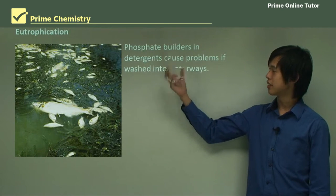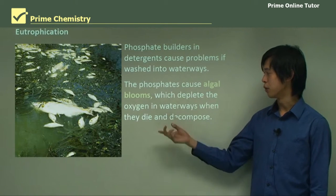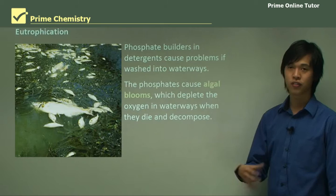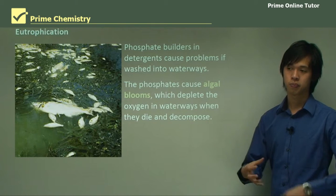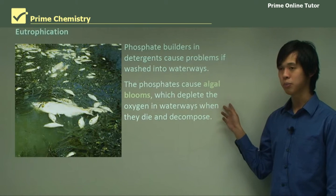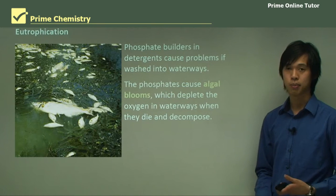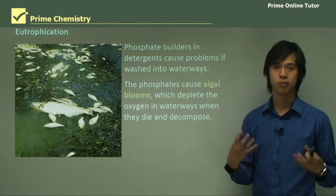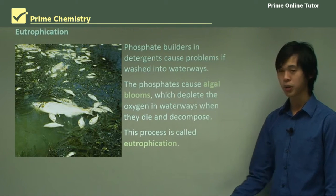Phosphate builders in detergents cause problems if washed into waterways. The phosphates cause algal blooms, which deplete the oxygen in waterways when they die and decompose. Remember eutrophication from chemical monitoring and management — phosphate builders in synthetic detergents can cause algal blooms because they act as a fertilizer. When the algae die and decompose, they consume oxygen, causing a reduction in dissolved oxygen content in the water. We call this process eutrophication.